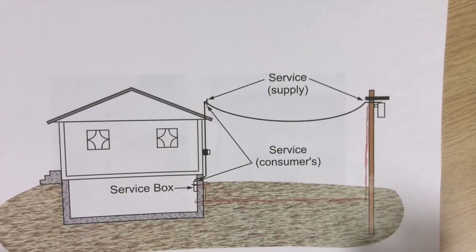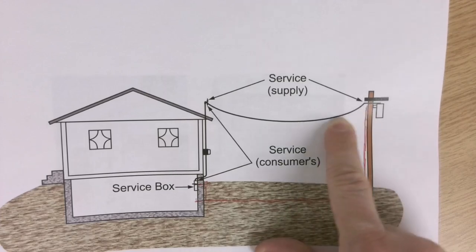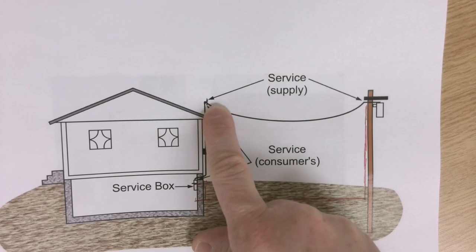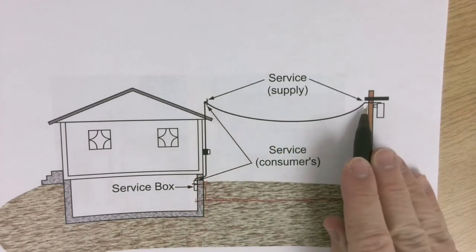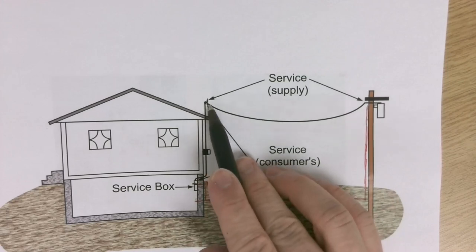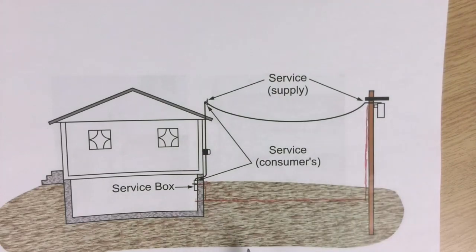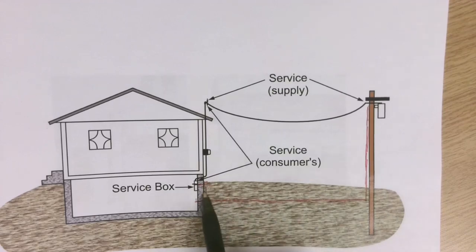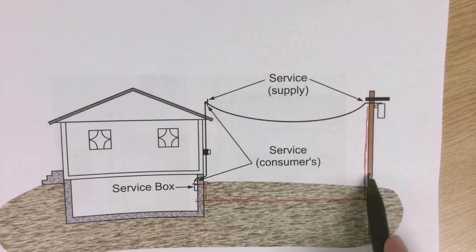For an overhead service, what happens is Nmax or Fortis — whoever the supply authority is — they run this overhead cable. We leave them enough wire to splice right here. The supply authority actually runs this overhead cable most of the time. They do that splice, get a bucket truck, string it across, and connect it to the transformer. For an underground service, you run that cable in a trench and leave enough at the base of the pole for the supply authority to come, put the cable up the pole, and connect it at the transformer.